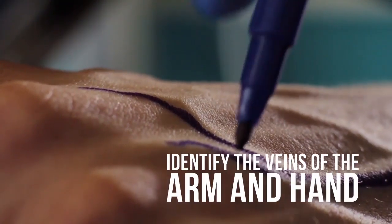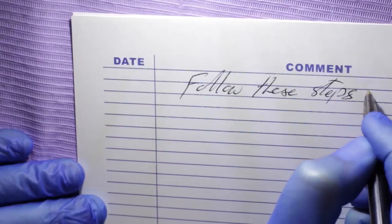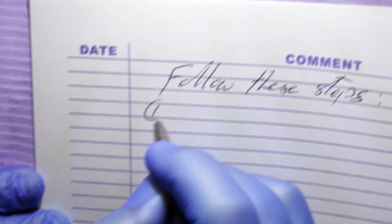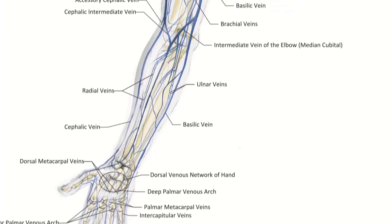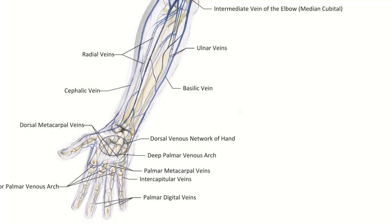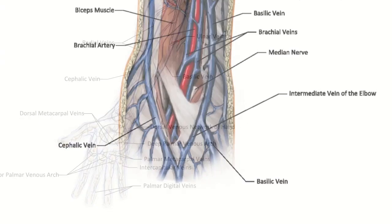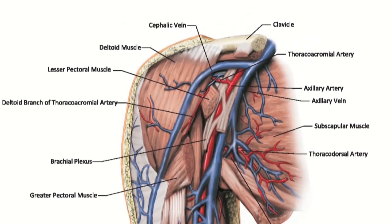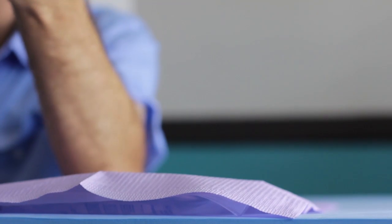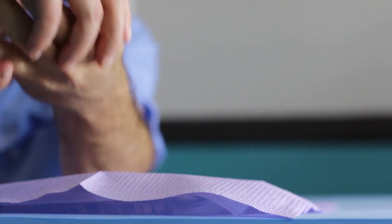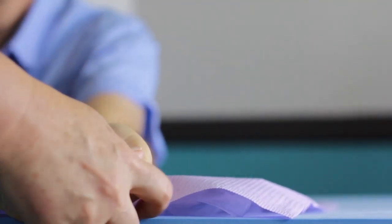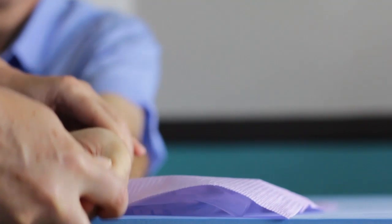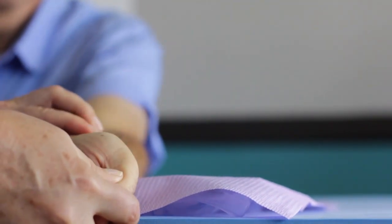Identify the veins of the arm and hand. Follow these steps. Study the detailed illustrations as well as the simplified diagram of the veins of the upper extremity. Ask the volunteer to lie down and let the arm hang down below the rest of the body to allow the passive gravitational filling of the veins.